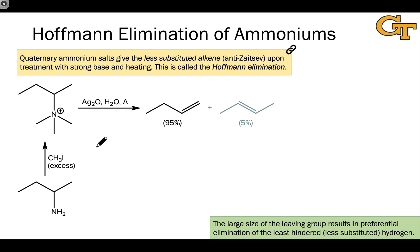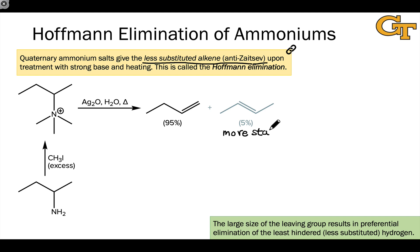The other reaction we'll look at is elimination of ammonium cations. These are unique because they eliminate in the presence of silver oxide and heat to give the less substituted alkene — called the anti-Zaitsev product — which is contrary to what is observed in E1 elimination of alkyl halides, where the more substituted product forms preferentially. This is odd because thermodynamically the more substituted, Zaitsev product is more stable.